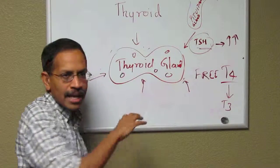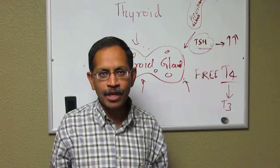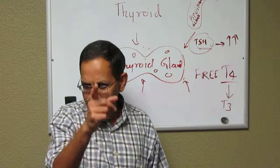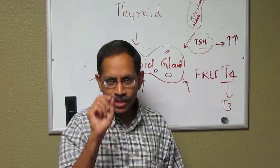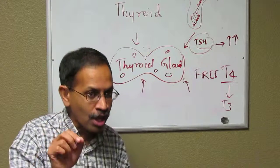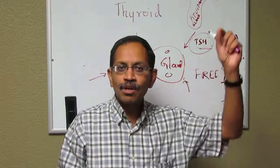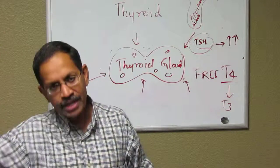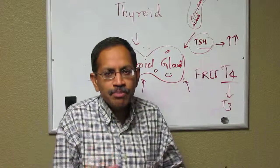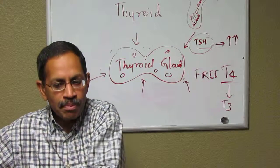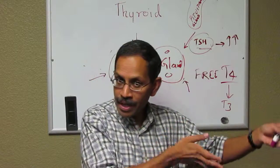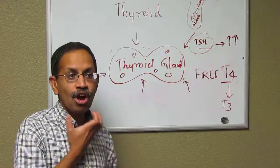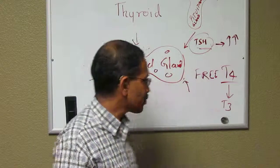The same thing can happen — the thyroid gland can become irregular and it becomes enlarged. An enlarged thyroid gland is called a goiter. A goiter can be because of a hyperactive thyroid gland, because of a hypoactive thyroid gland, or simply because the patient is going through puberty or pregnancy. In this condition, the goiter is because of hyperthyroidism.